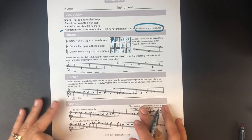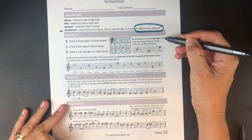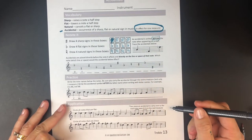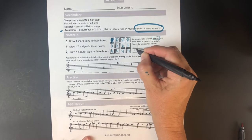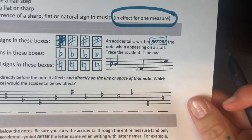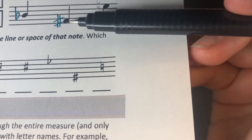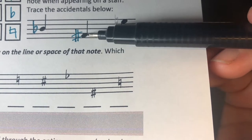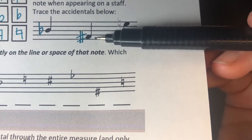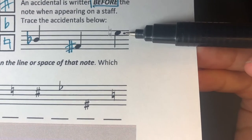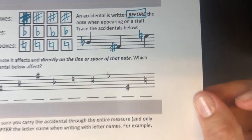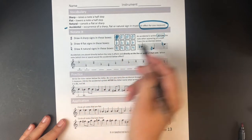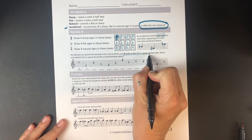An accidental is written before the note when appearing on a staff. So if this is the note you want to have affected by the flat, you put the flat before that note. Same thing with a sharp. Notice how if the note is on the bottom space, the middle of the sharp sign is going to be right on the bottom space. If it's on the top space, that natural sign is going to be right on that top space — you write it before the note.